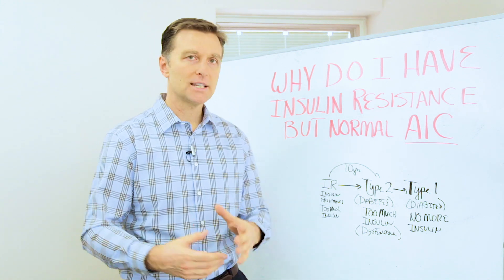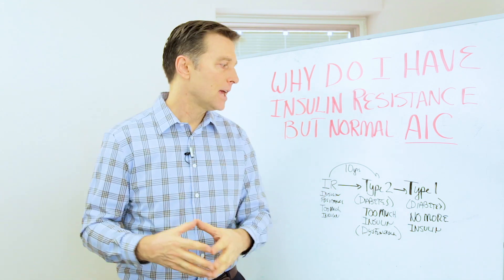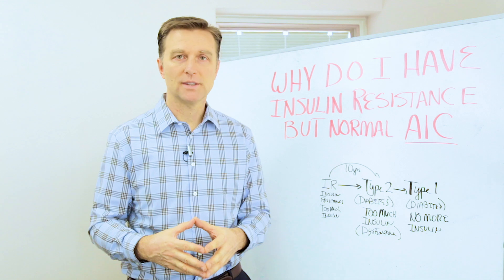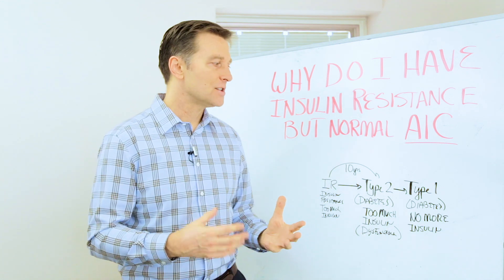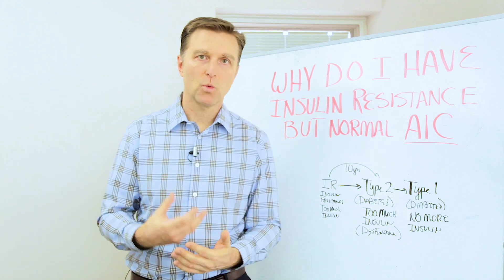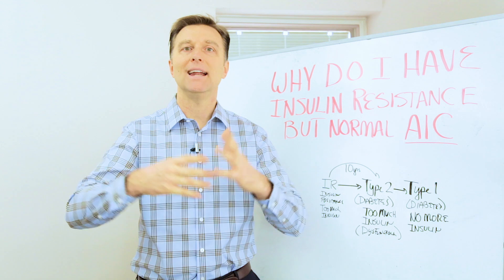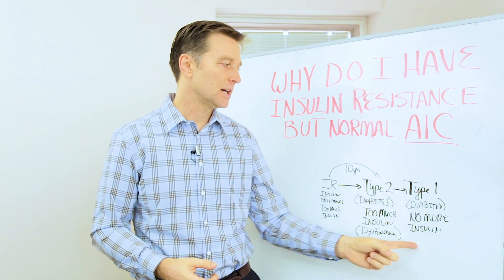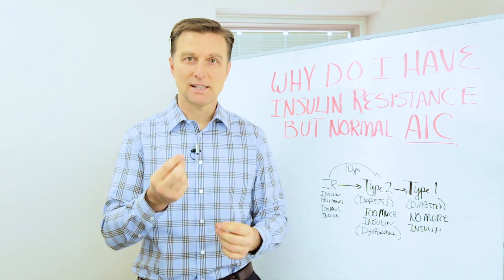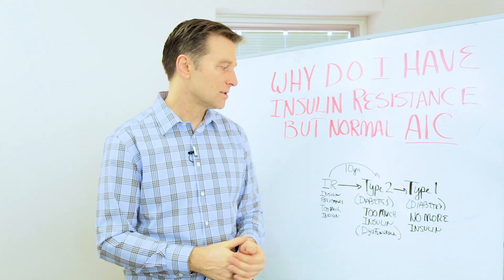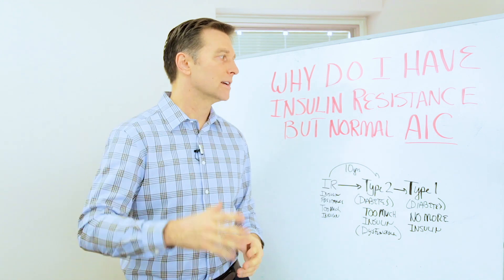But if you take a type 2 over a period of time, if you notice a lot of type 2s, they start on metformin, and then all of a sudden they need more insulin, and more insulin, and more insulin. Why? Because their cells that produce insulin are wearing out over time, to the point where all of a sudden they don't produce any insulin and they would be officially categorized as type 1. Type 1 just doesn't produce any more insulin. The cells are exhausted. So this is the kind of cycle of worsening of blood sugars.